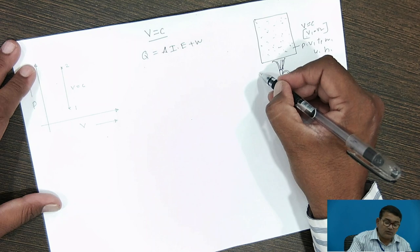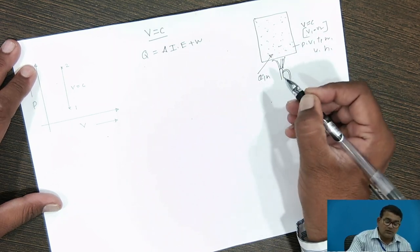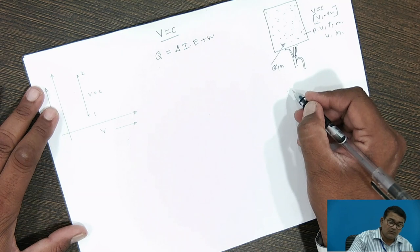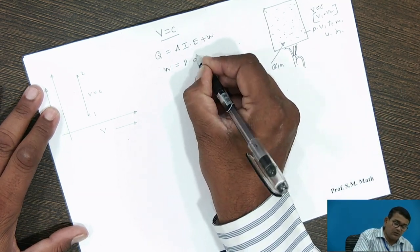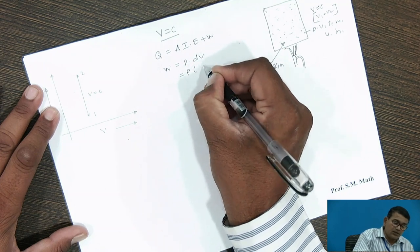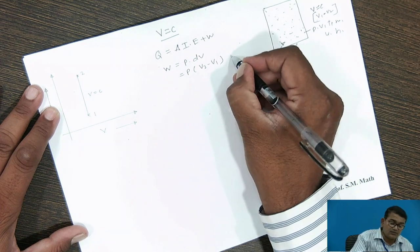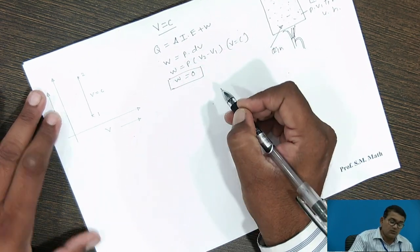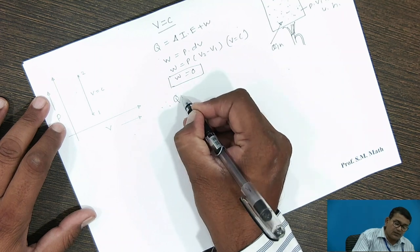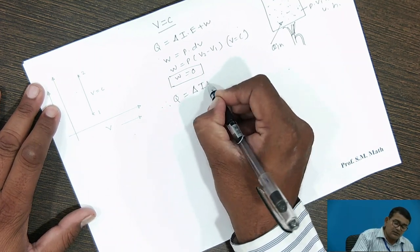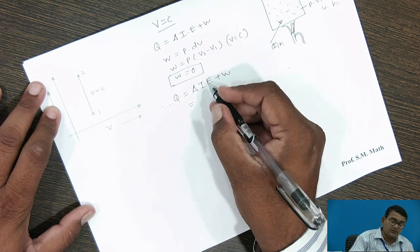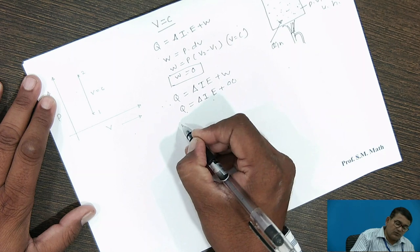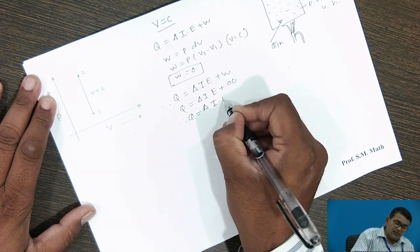Whatever quantity of heat is added in this constant volume process, volume remains constant. When the volume remains constant, work done is equal to P into dV, or P into bracket V2 minus V1. But as it is a constant volume process, it is equal to 0. So work done is equal to 0. When work done is equal to 0, then by the first law of thermodynamics, heat supplied is equal to change in internal energy plus work done. Work done is equal to 0, therefore Q heat supplied is equal to change in internal energy.